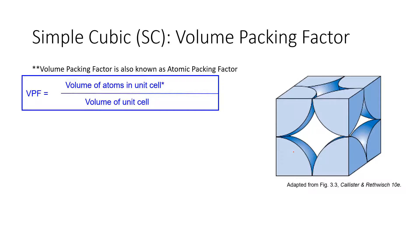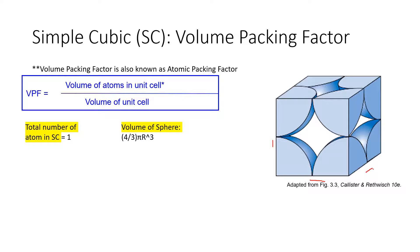To calculate the atomic packing factor, or volume packing factor, by definition it is the total volume of atoms within the unit cell over the total unit cell volume. The total number of atoms in simple cubic is one, and the volume of an atom is treated as a sphere: four-thirds π r cubed. The total unit cell volume is a cubed.